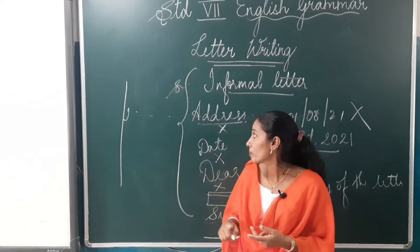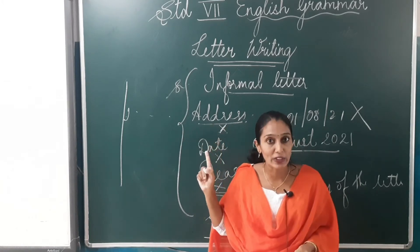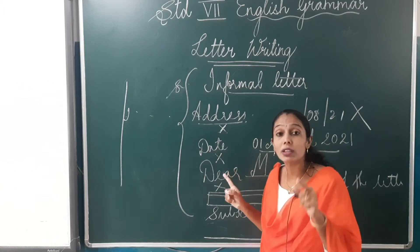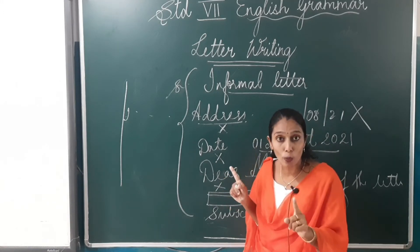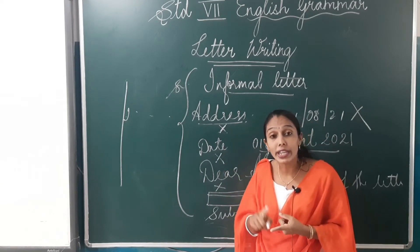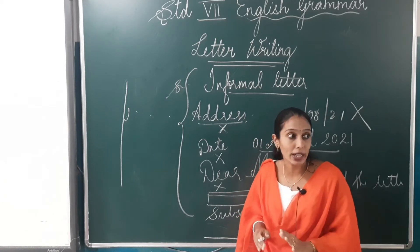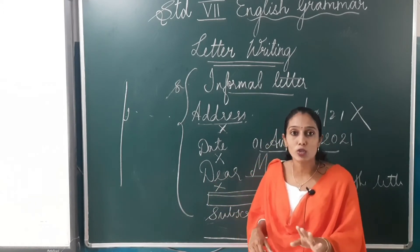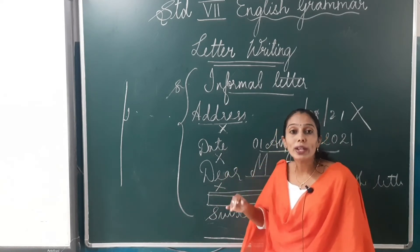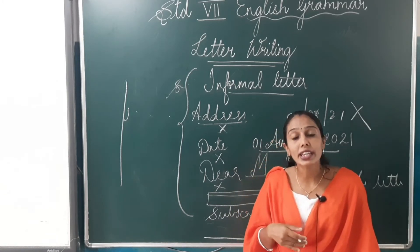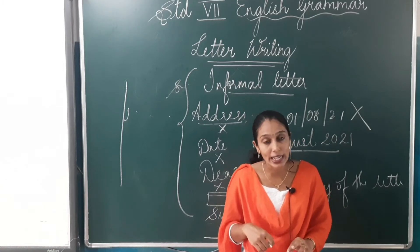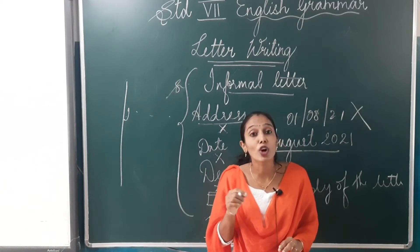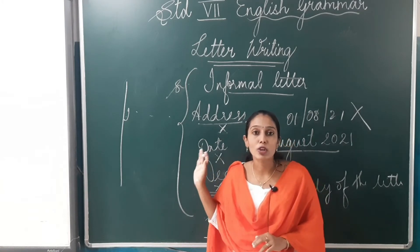Once again I repeat, children. You will start with the address. Then you will leave one line and write the date — the day you are writing. The date I have written is just an example; the day you are writing the letter, you put that particular date. Then again you will leave one line, then write the salutation — dear so-and-so, to whomsoever you are addressing. Then leave one line for the content, the body of the letter. When the letter is over, leave one line, then comes the subscription — yours truly, yours loving friend, your sister, your friend, whatever. And then you will write your name, that is called the signature. This is the format of an informal letter.